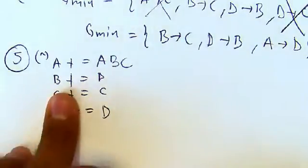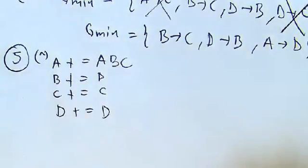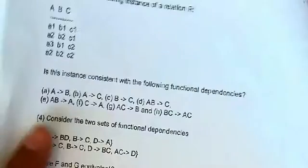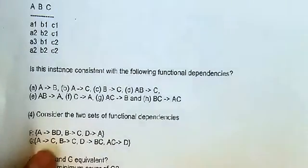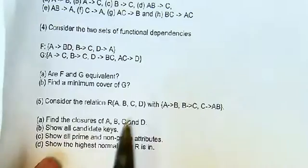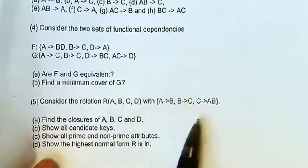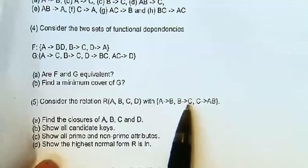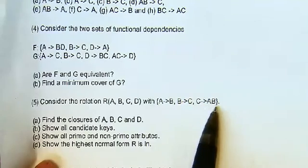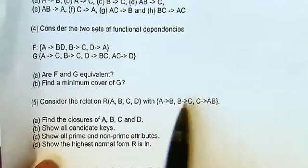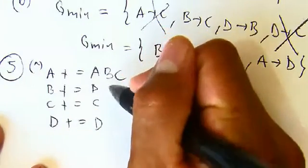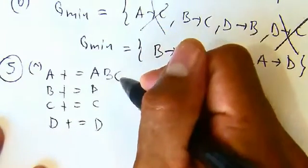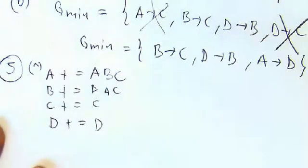For B+, we use B→C and C→AB. Starting with B, we get C, and from C we get A and B. So B+ = {A, B, C}.